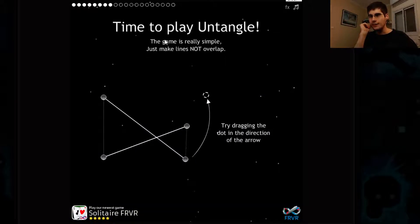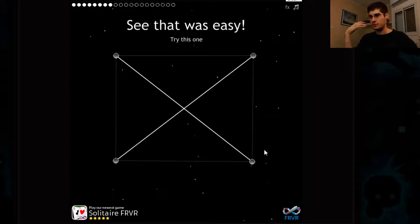Time to play Untangle. This game is really simple. Just make the lines not overlap. So now they overlap. Now they don't. I can drag around these dots and that's about it. Level one, just a very basic level.